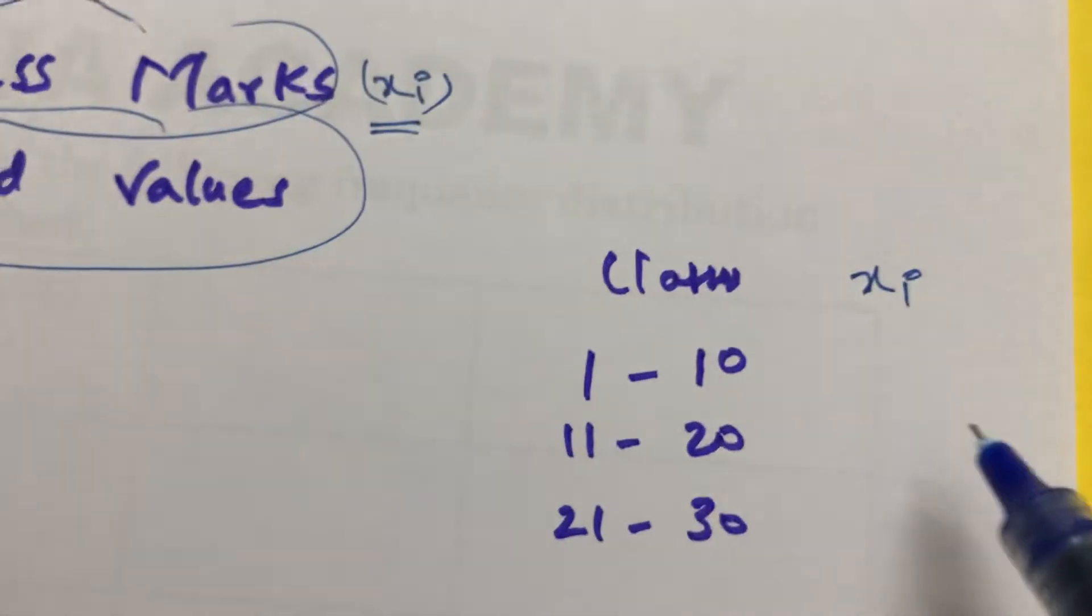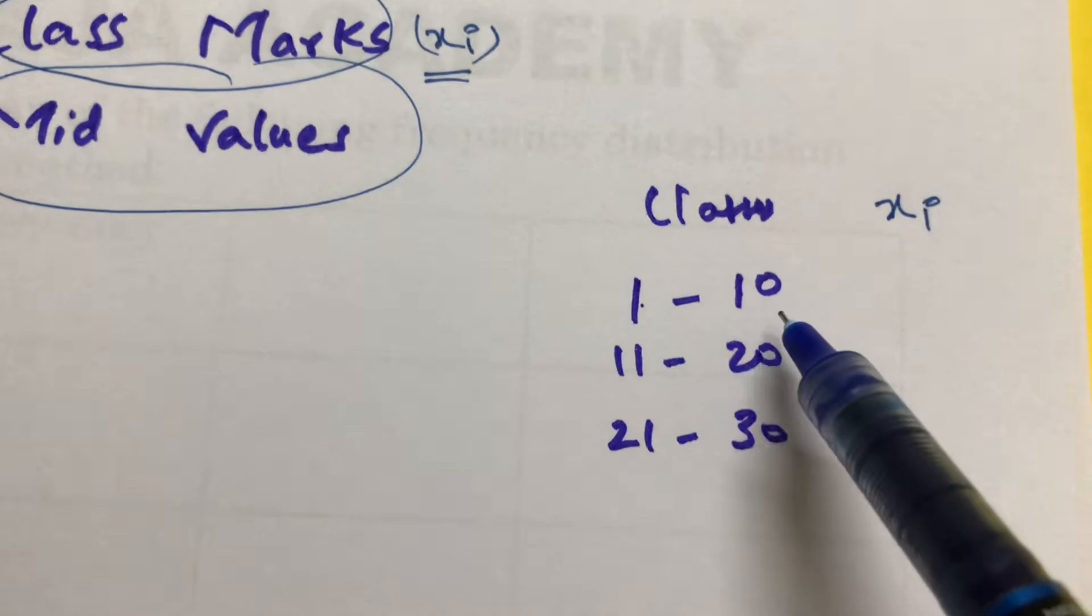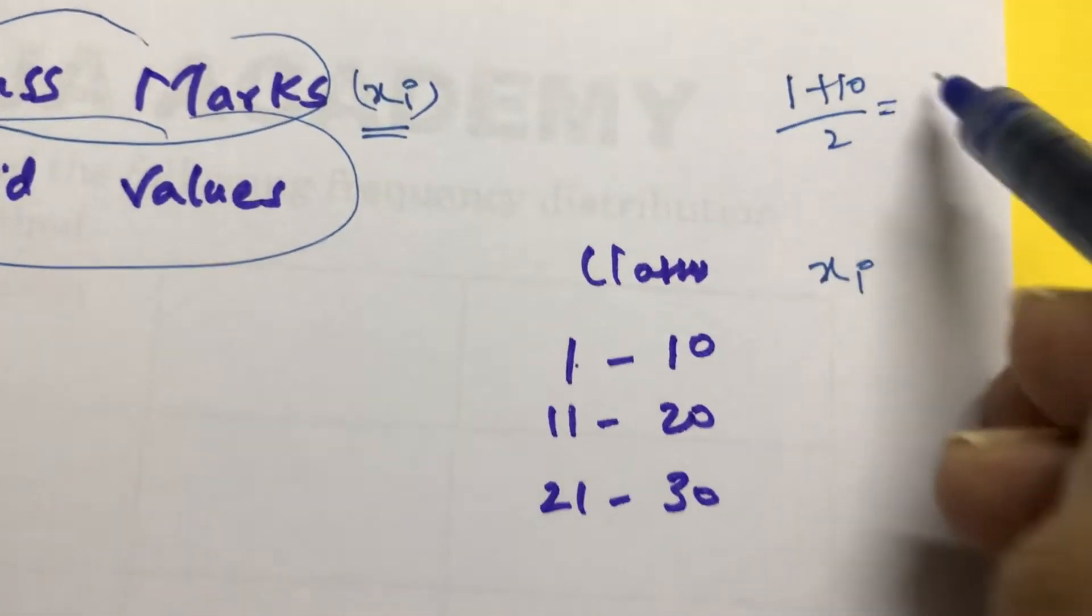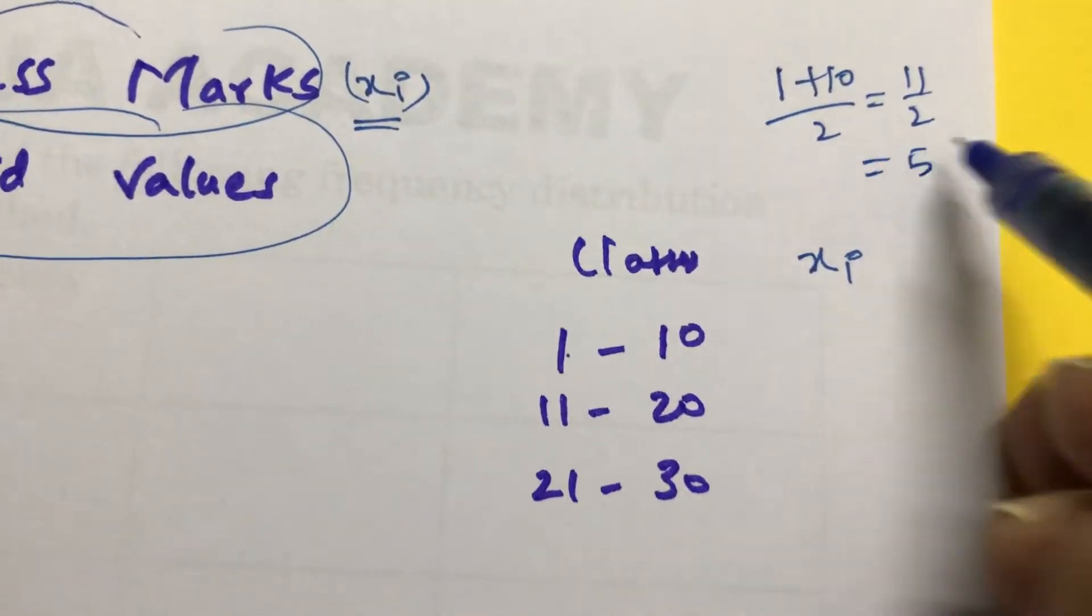Denoted by x_i. Add these two values. 1 plus 10 is 11. Half of 11: 1 plus 10 by 2, 11 by 2, which is 5.5.